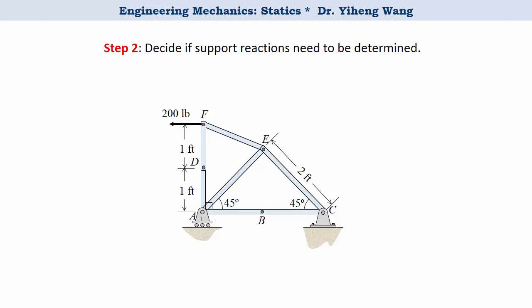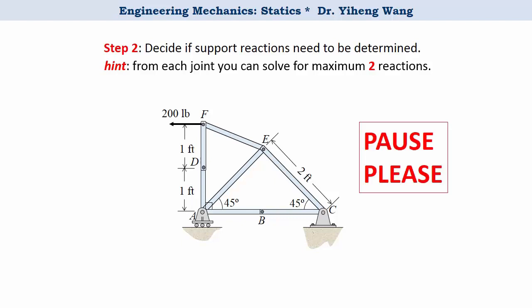So to determine that, the key will be for each joint you can write a maximum of two equations and solve for two unknowns. Therefore I would like you to pause for now and ask yourself, first of all if you need to solve for the support reactions or not, and secondly if not, which of these joints you should start with for your analysis. So hopefully you have come to the conclusion that you don't need to solve for the support reactions, and also you should start with joint F for your analysis.